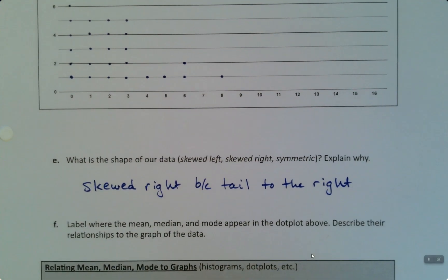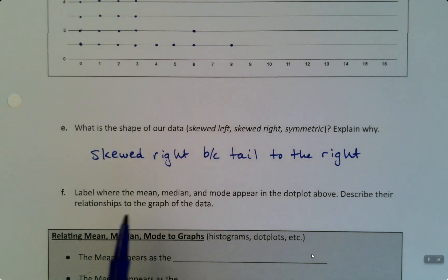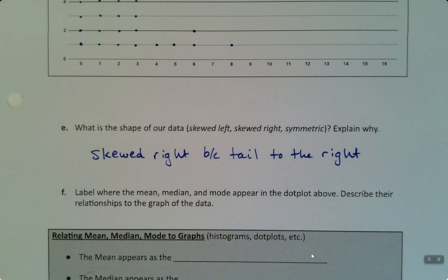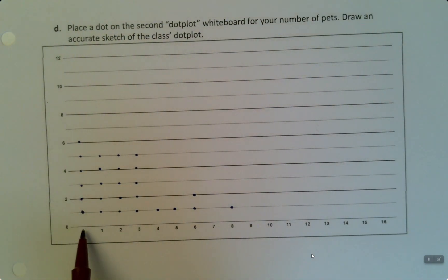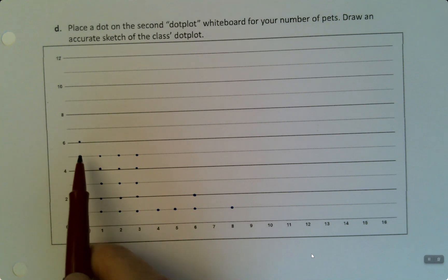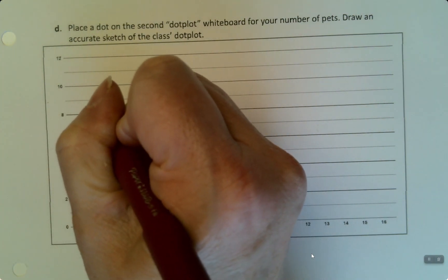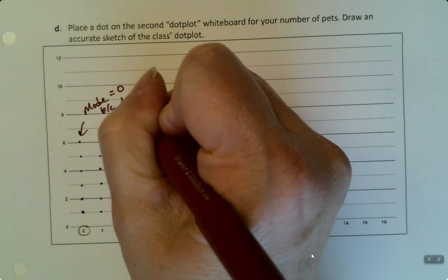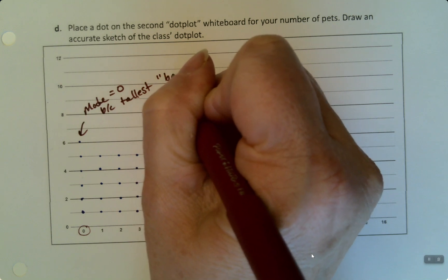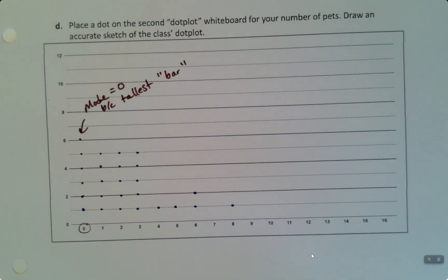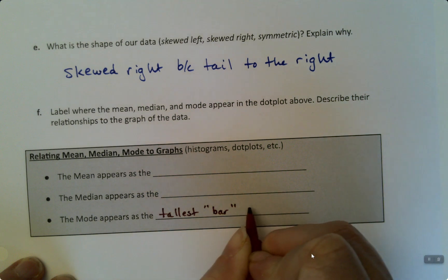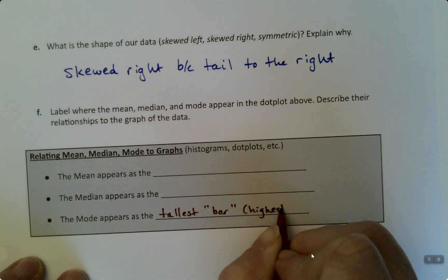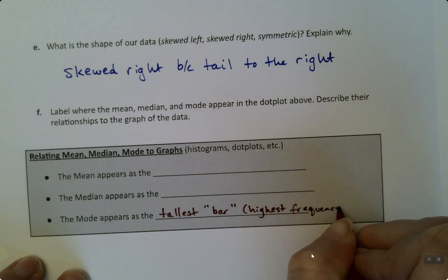Now really importantly, we want to label where the mean, median, and mode appear in the dot plot above, describing their relationship to the graph, because we're trying to get this visual sense of what they are. Well, the mode I think is the easiest one. So the mode is zero, because zero occurs the most often. You can see it has the tallest bar. So the mode appears as the tallest bar. In other words, it has the highest frequency, or count. So the mode is really easy to see.